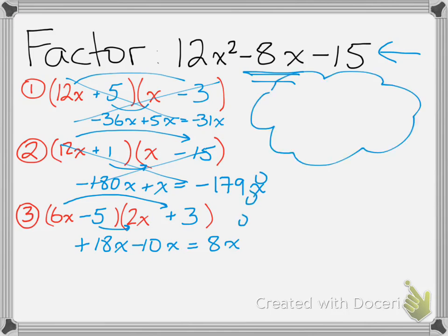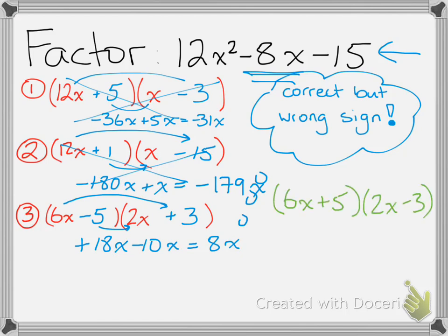Well, now we should be thinking, hey, well, that's the correct answer, but the wrong sign. So, that means that our factors are actually those same numbers, but with a different sign. So, 6x plus 5, 2x minus 3. And that's factoring complex trinomials.